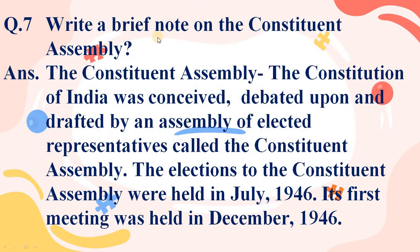Write a brief note on the Constituent Assembly. The Constitution of India was conceived, debated upon, and drafted by an assembly of elected representatives called the Constituent Assembly. Jho Bharat ka Samvidhan hai, woh chunye hue pratinidhiyon dwara banaya gaya jise Constituent Assembly kaha gaya. In July 1946 mein iski pehli meeting hui.